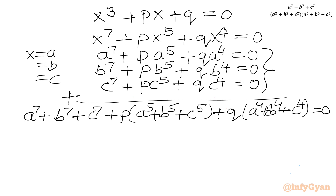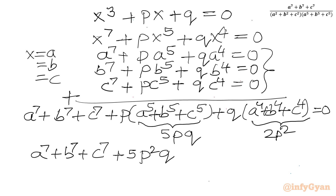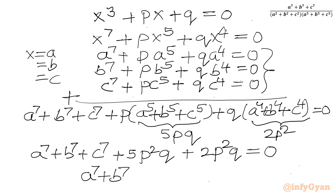Now applying the values: A to the fifth plus B to the fifth plus C to the fifth equals 5PQ, and A to the fourth plus B to the fourth plus C to the fourth equals 2P squared. So A to the seventh plus B to the seventh plus C to the seventh plus P times 5PQ plus Q times 2P squared equals 0, giving 5P squared Q plus 2P squared Q equals 7P squared Q. The conclusion is A to the seventh plus B to the seventh plus C to the seventh equals minus 7P squared Q.